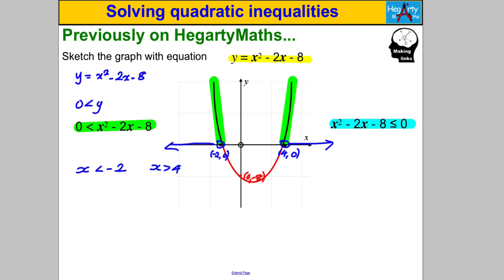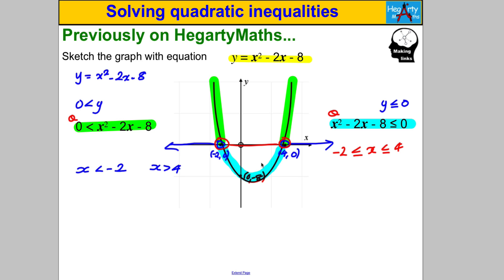Now imagine someone asks: when is x² - 2x - 8 ≤ 0? You draw y = x² - 2x - 8 and convert this into: when is y ≤ 0? Clearly y ≤ 0 down along here, between the two roots. The x-values are between -2 and 4, so the answer is -2 ≤ x ≤ 4. Because we have a less-than-or-equal-to sign, we use that type of inequality throughout.